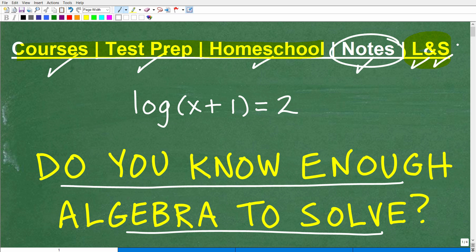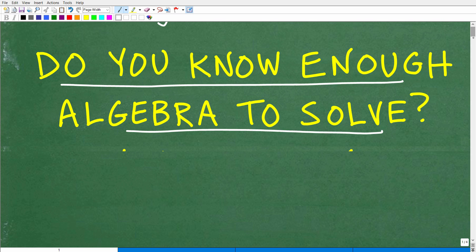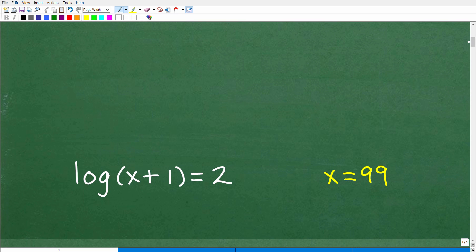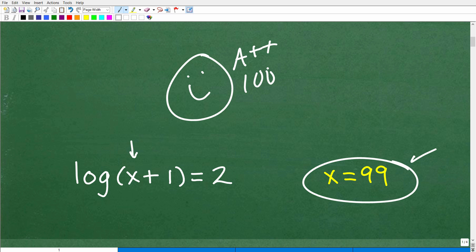Okay, so let's go ahead and show you the answer to this problem. And then, of course, we're going to discuss exactly what's going on here. So this is LOG. But we say this log. Log of x plus 1 is equal to 2. We're trying to solve for x. x is equal to 99. Okay, so how did you do? Did you get that right? Well, that's very impressive. Matter of fact, I'm going to give you a nice little happy face and A plus plus a 100% and a few stars so you can have an extra special day. Nice job.